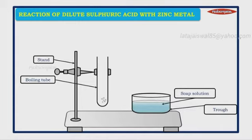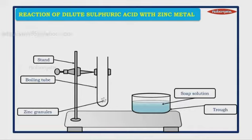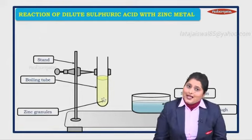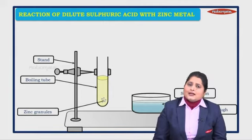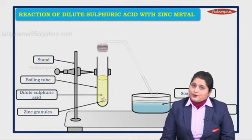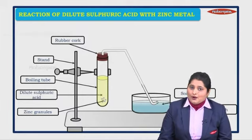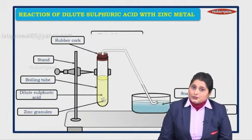Inside the test tube we take zinc granules, as we are learning the reaction of dilute sulfuric acid with zinc metal. Then we are going to add sulfuric acid. After adding sulfuric acid, we cover the test tube with the help of a rubber cork, and inside the rubber cork there is a delivery tube.